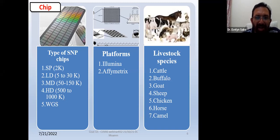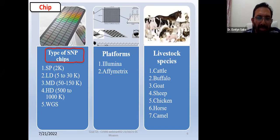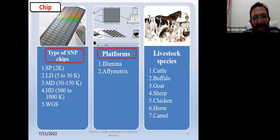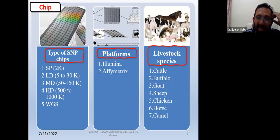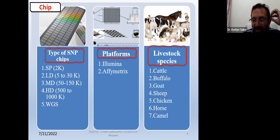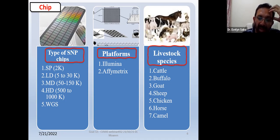In livestock, we categorize chips into three major categories. The first type is the small chip — up to 2k, with around 2,000 SNPs. Then the medium chip, that's the LD (low density) chip — 5 to 30k. Then medium density. And the biggest one is the HD (high density). The most prevalent chips now in the market are HD chips, which have SNPs around 500k to 100,000k. And if you have money, you can go for WGS — whole genome sequencing.